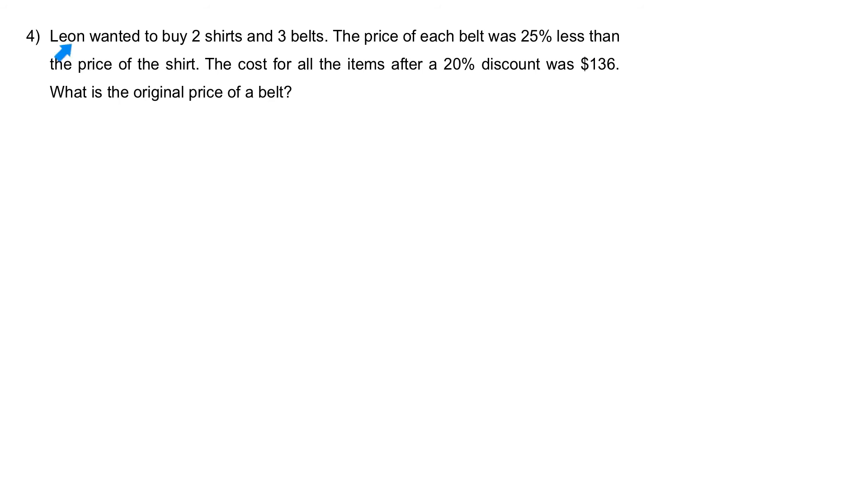Question 4. Leon wanted to buy 2 shirts and 3 belts. The price of each belt was 25% less than the price of the shirt. The cost of all the items after the 20% discount was $136. What is the original price of a belt? Let's change the percentage. 25% will be a quarter. 20% will be 1 fifth.